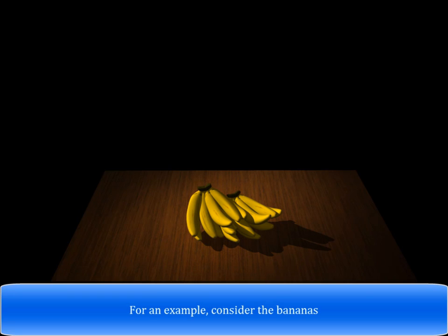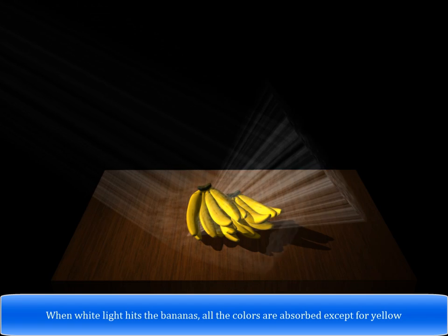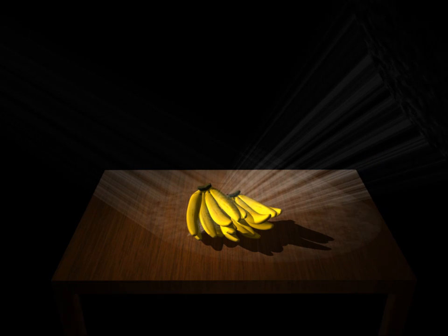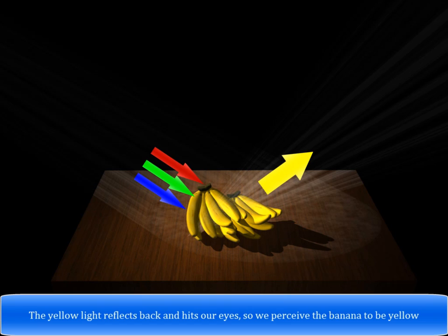For an example, consider the bananas. When white light hits the bananas, all the colors are absorbed except for yellow. The yellow light reflects back and hits our eyes, so we perceive the banana to be yellow.